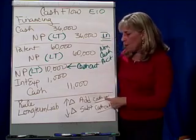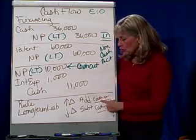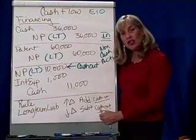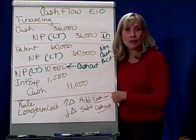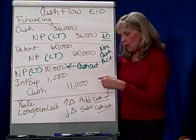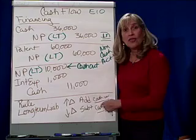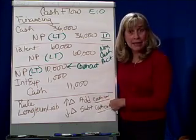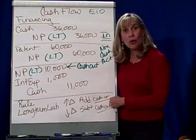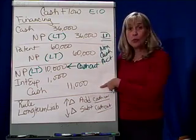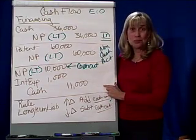To recap: when we have long-term liabilities and the change is an increase, that means cash is coming in because we're going into debt. When long-term liabilities decrease, that means we repaid them, and that's cash going out — so we subtract. Those are the rules for financing activities with long-term debt.